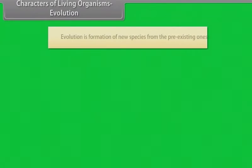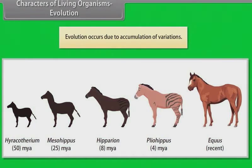Characters of living organisms - Evolution: Evolution is formation of new species from pre-existing ones. Evolution occurs due to accumulation of variations.